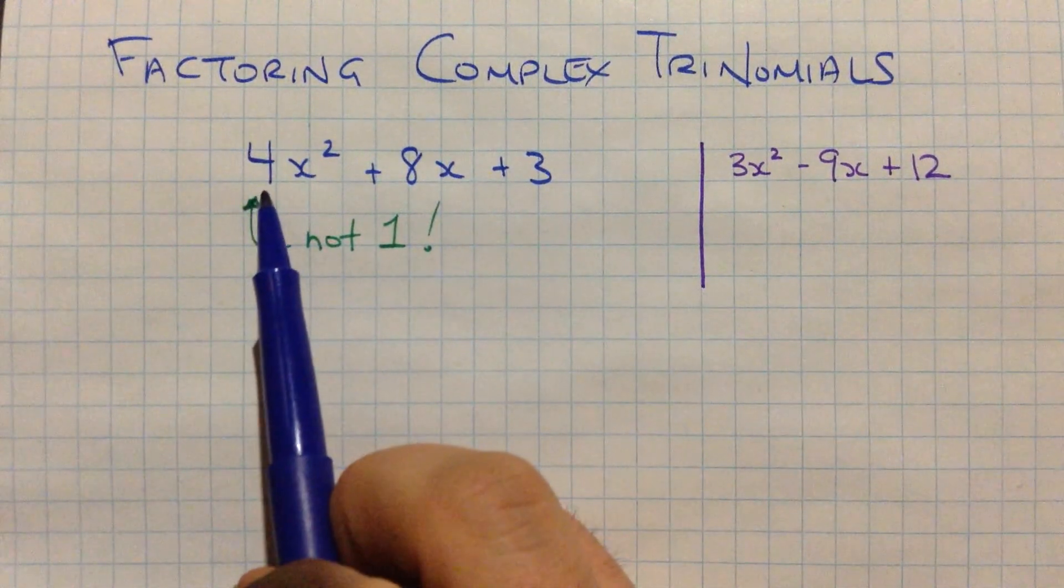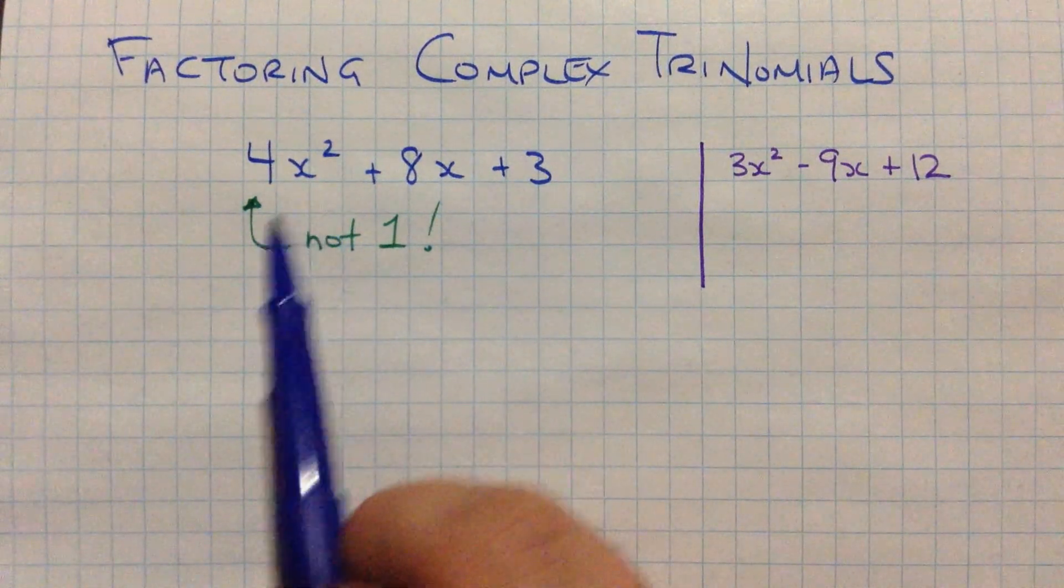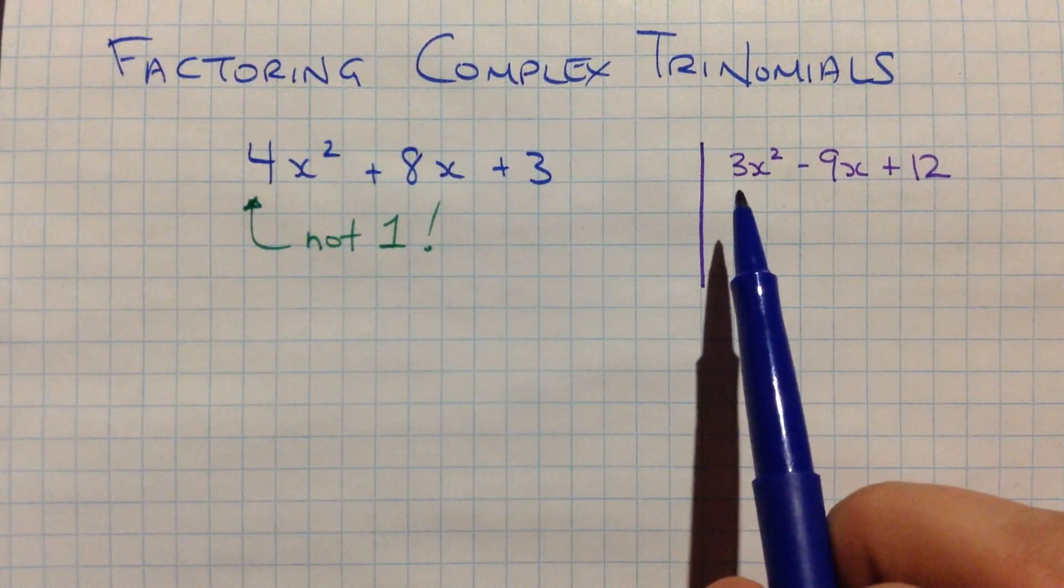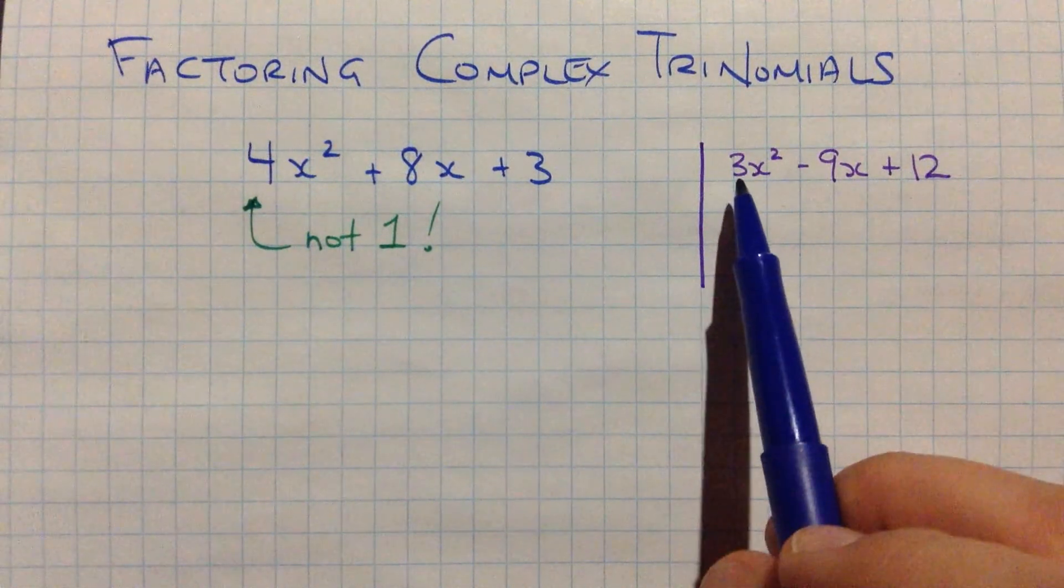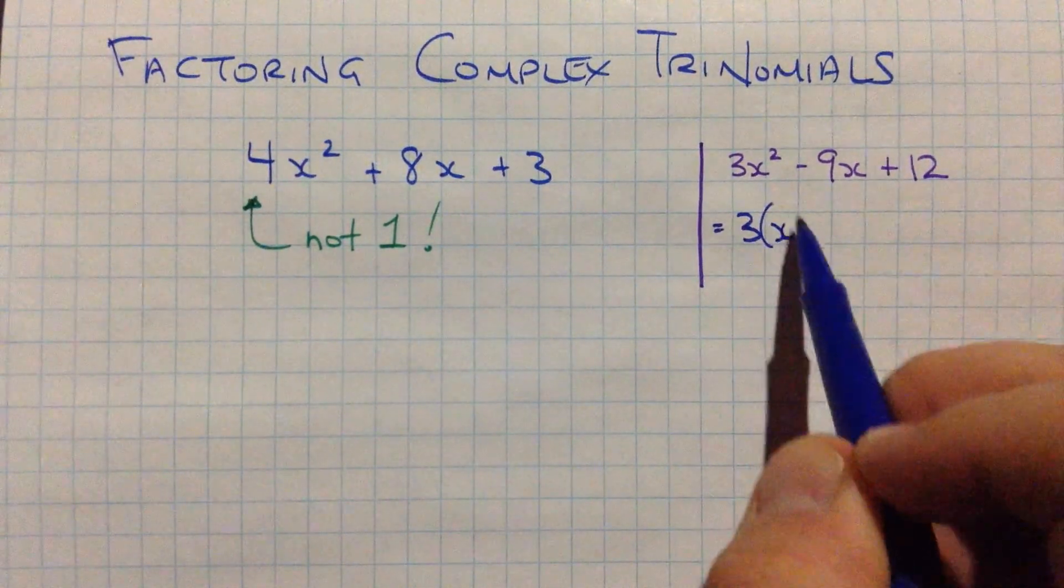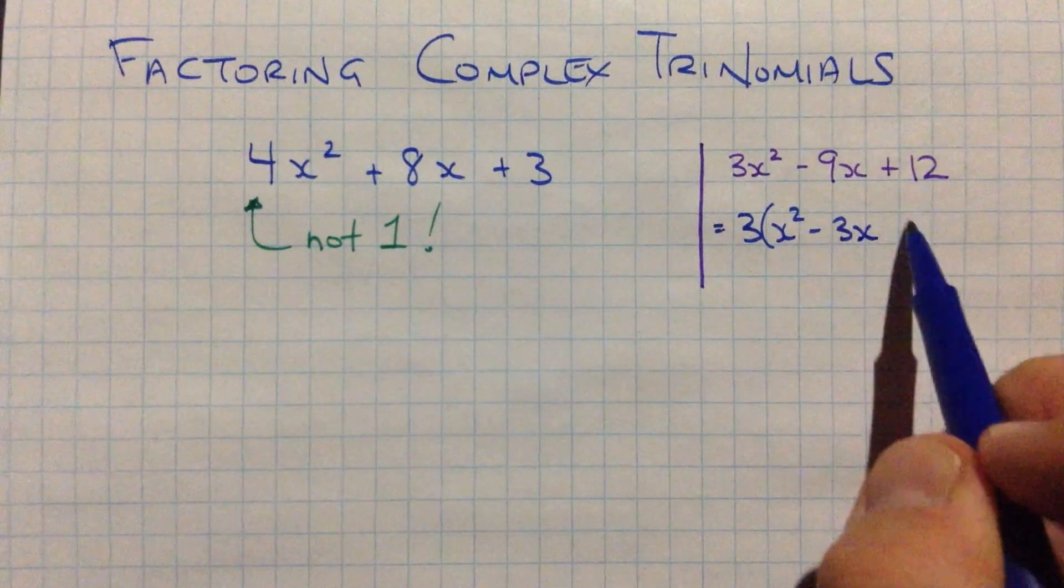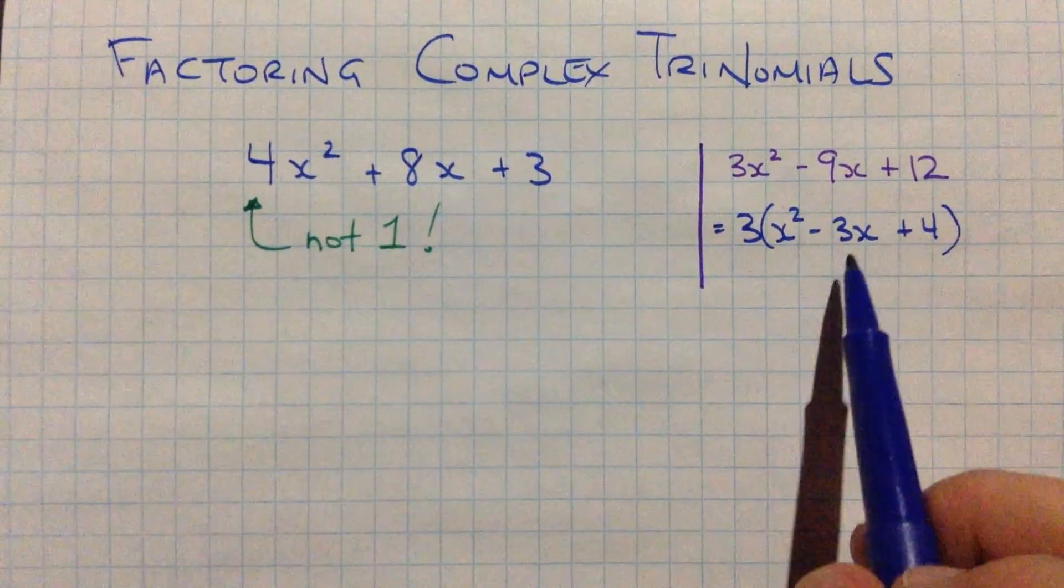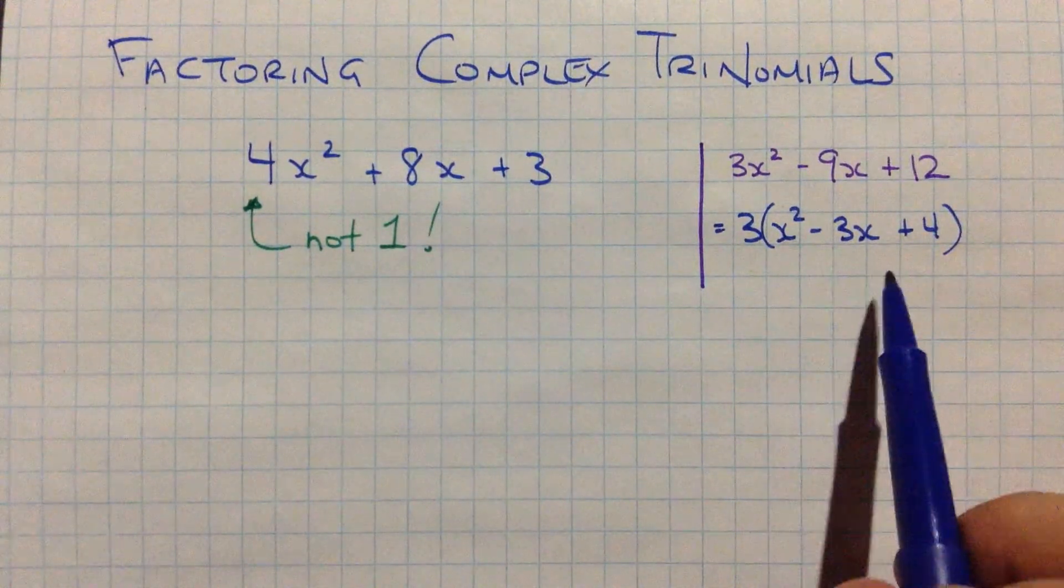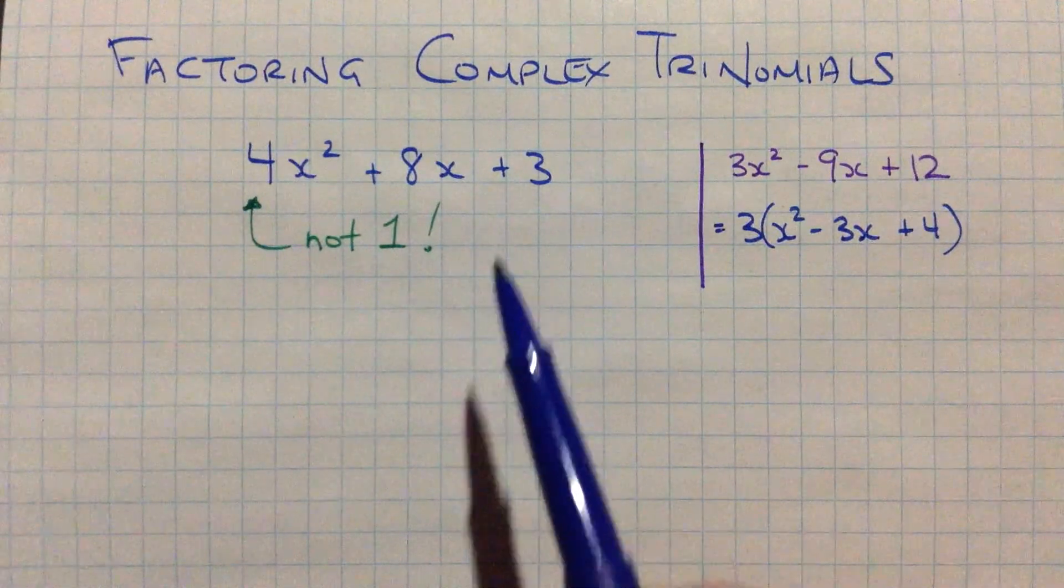These are the ones that have something other than a 1 in front of our highest x squared term. See, there's a 4. But sometimes you'll see in an example like this, this one's actually not complex because I could factor out that 3 at the start from every term and end up with a simple trinomial over here, which is a lot easier to deal with for most people than this complex type where we can't factor out this common factor.